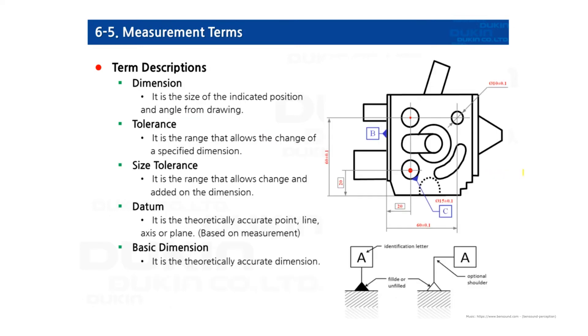Let's take a look at these useful terms for measurement. First, dimension. It is the size of the indicated position and angle from the drawing.